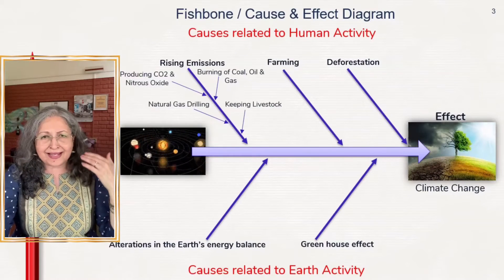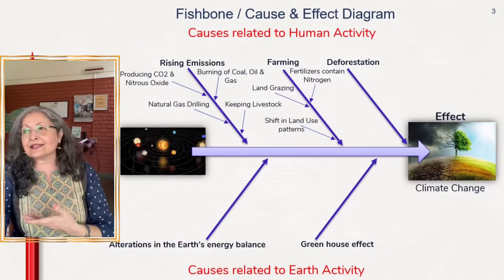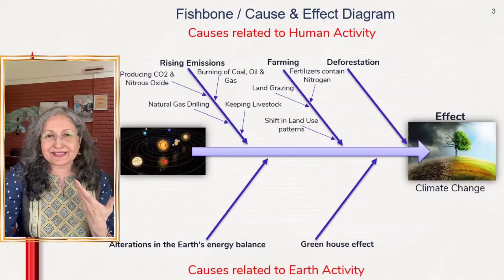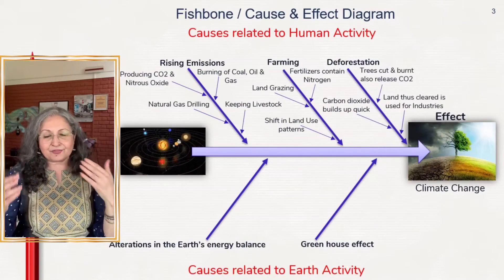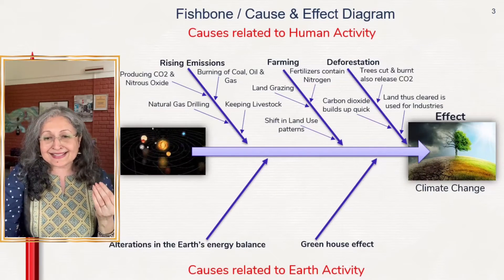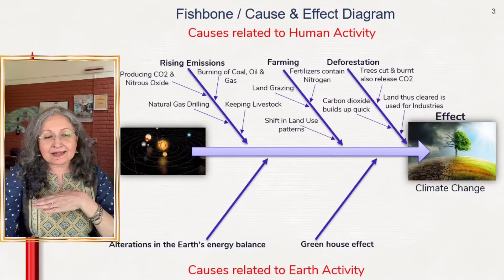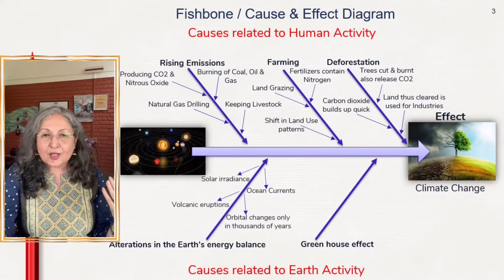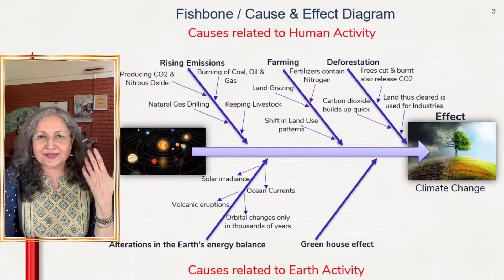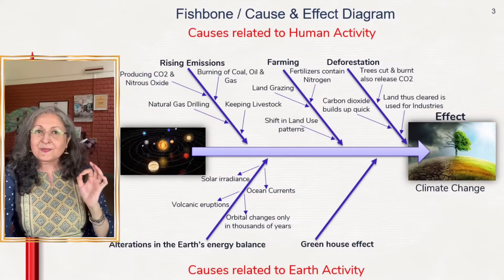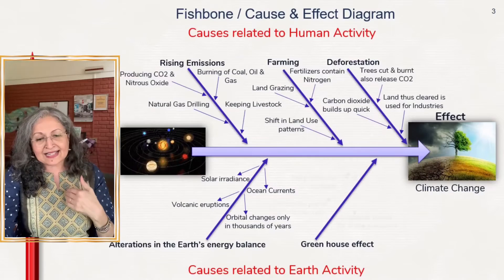Similarly, I might put down some sub-causes related to farming the land — grazing, fertilizers, nitrogen in the fertilizers, and so on. Sub-causes for deforestation include cutting of trees, etc. We're not really doing a lesson on climate change; we're doing a lesson on how to create a fish bone analysis. For earth's energy balance changes, we put down sub-causes like ocean currents or orbital changes, which take thousands of years but are happening.